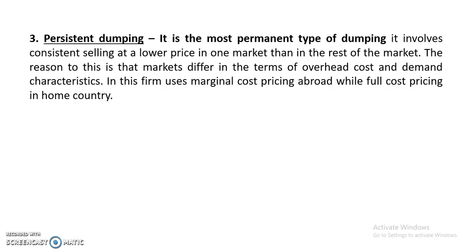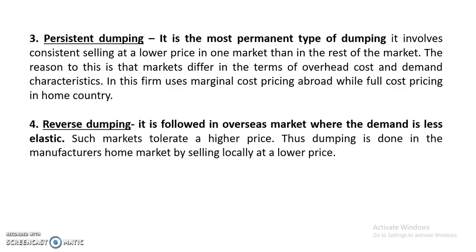Dumping is mainly done at the international level. The last type is reverse dumping. Reverse dumping is followed in overseas markets where demand is less elastic, so such markets can tolerate a higher price. Thus in reverse dumping, the dumping is done in the manufacturer's home country while selling locally at a lower price — the opposite of typical dumping, as the name itself suggests.